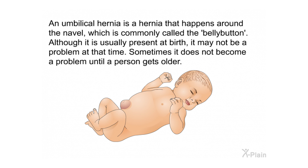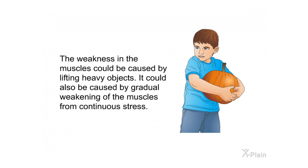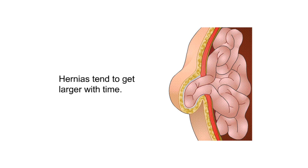An umbilical hernia is a hernia that happens around the navel, commonly called the belly button. Although it is usually present at birth, it may not be a problem at that time — sometimes it does not become a problem until a person gets older. The weakness in the muscles could be caused by lifting heavy objects or by gradual weakening from continuous stress. Hernias tend to get larger with time.